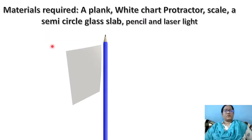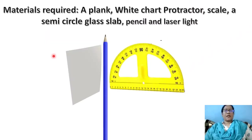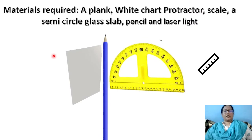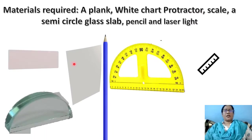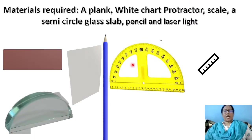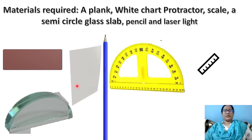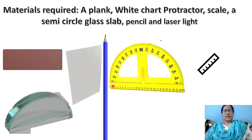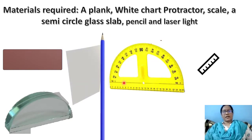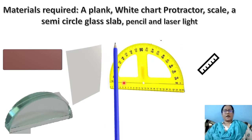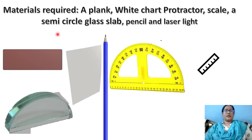So what materials are required? Cardboard, white chart, protractor, scale, semicircular glass slab, pencil, and laser light. These are the materials required.